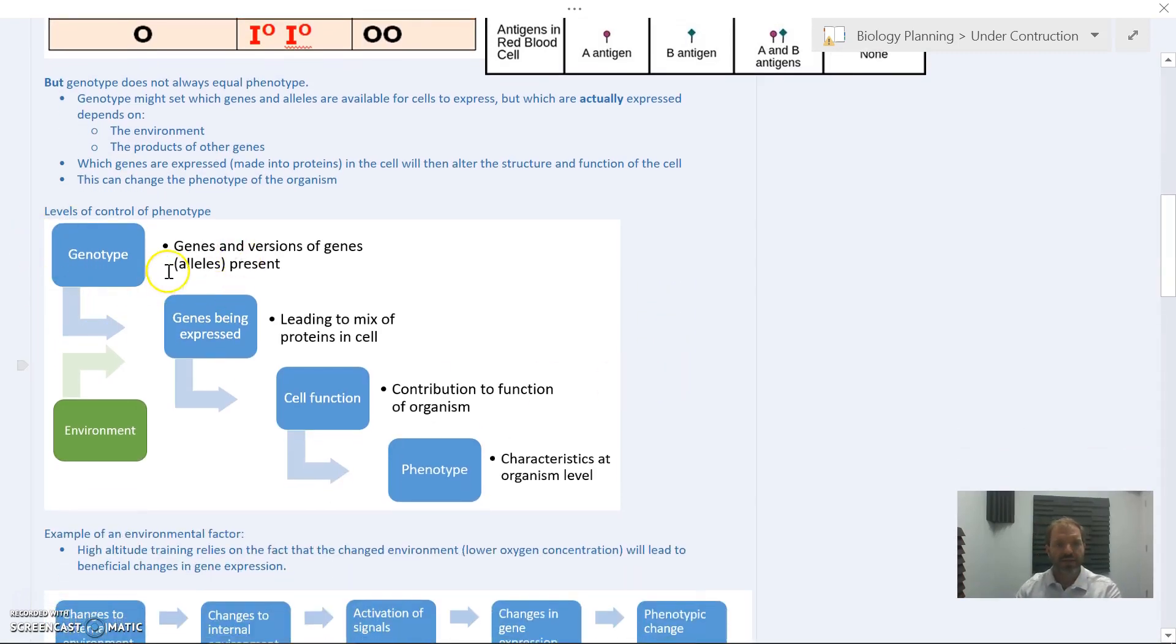A level of control looks like this: Your genetic makeup says which genes and versions are available. The environment as well both have an impact on which genes are actually expressed. This leads to a different mix of proteins in the cell. Those proteins doing things in the cell will change cell structure and function. As your cells have different functions, they produce different things within the organism, which relates to the phenotype, the characteristics and traits of that organism.